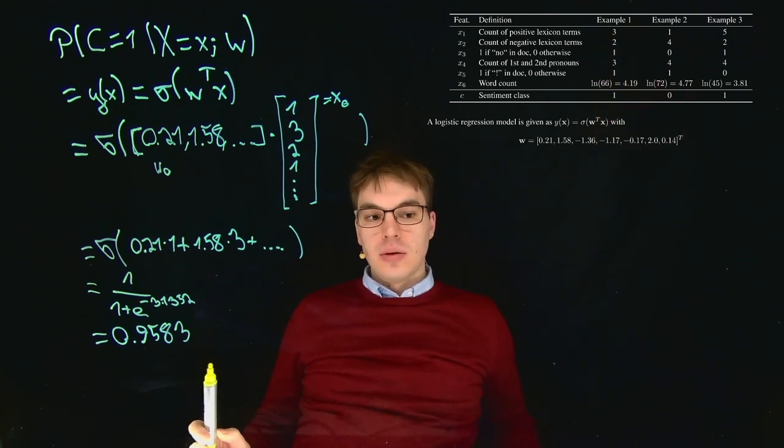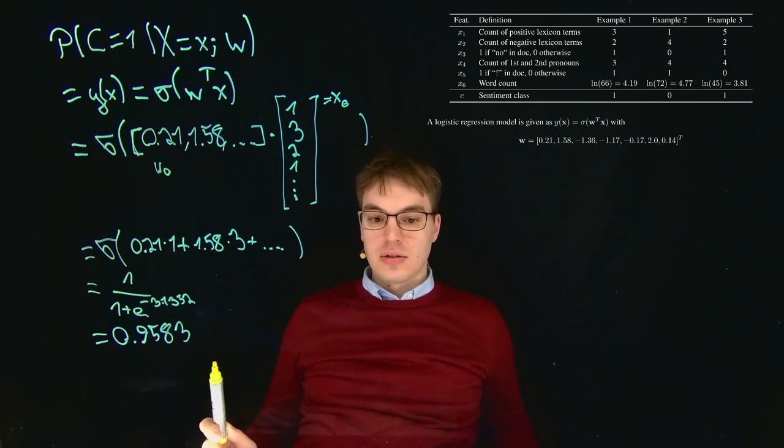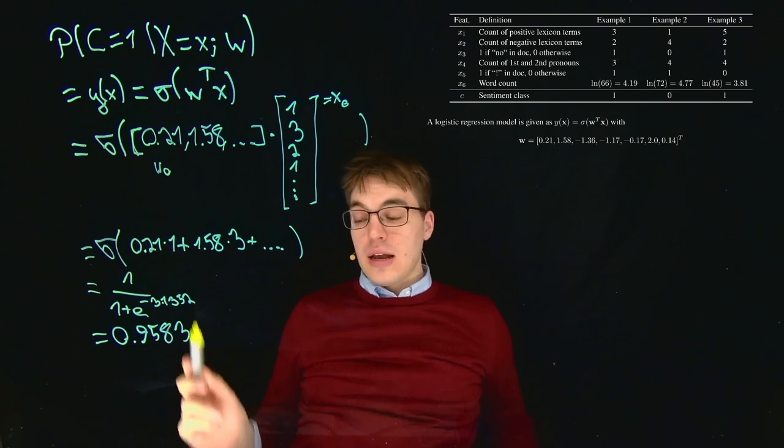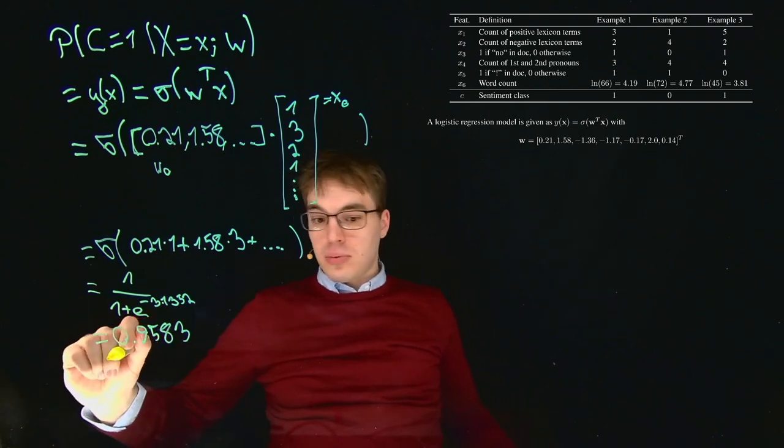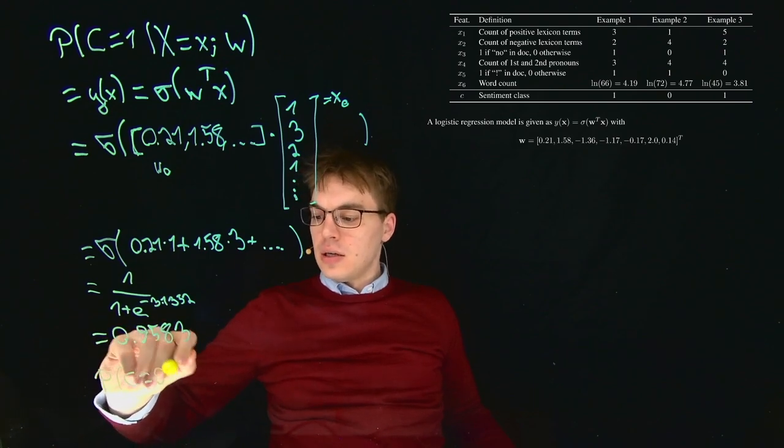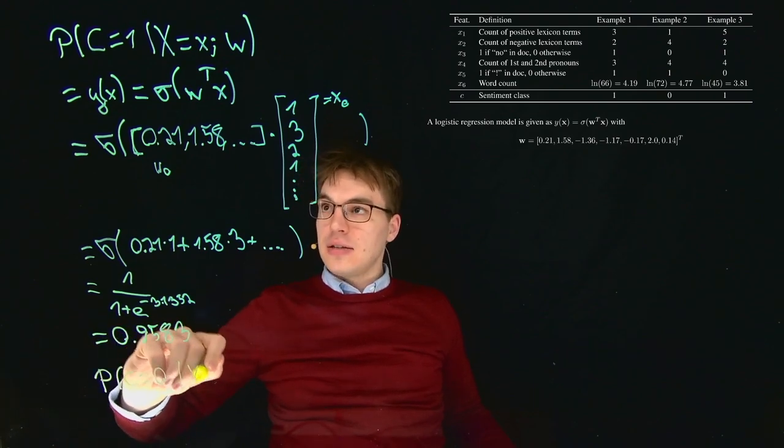This means that we would expect a probability of our first example to be positive of 95% or 96% roughly. Now the question is, what is then the probability of it being attributed to the negative class?